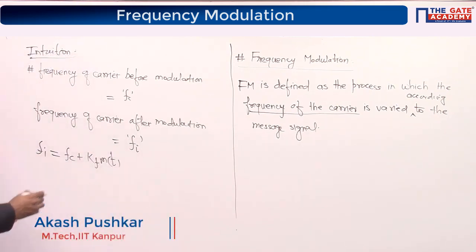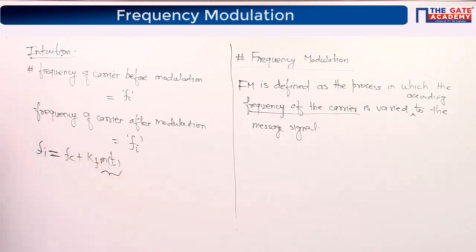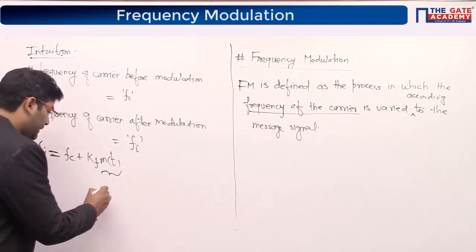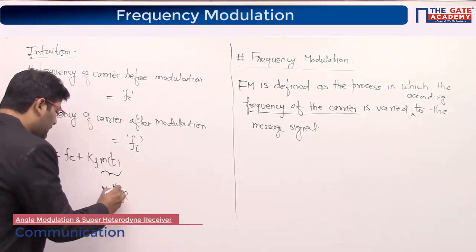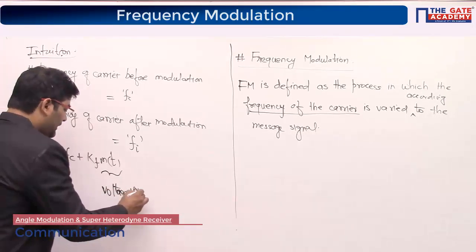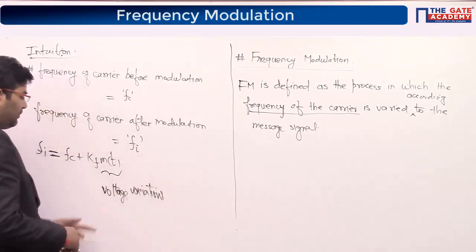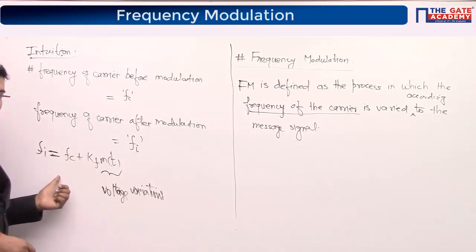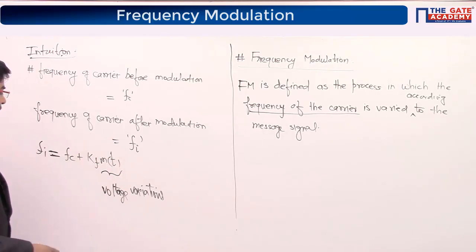If the carrier is not modulated, m(t) = 0 and Fi = fc. If m(t) is non-zero (case 2), then Fi = fc + Kf·m(t). Kf is just like Ka — it is the frequency sensitivity of the modulator. Its unit is Hz per volt, just like Ka was responsible for normalizing the AM signal.